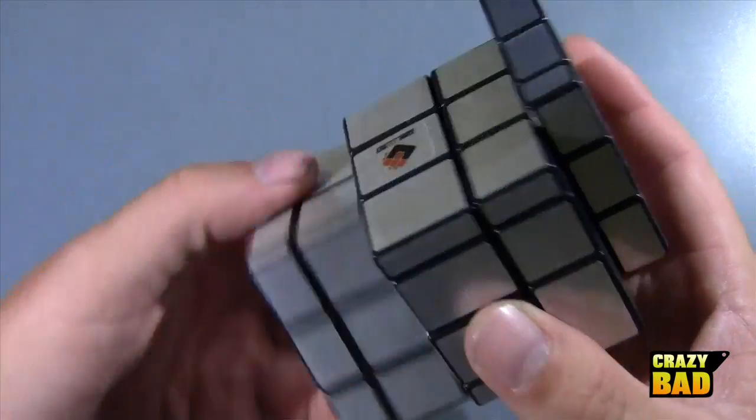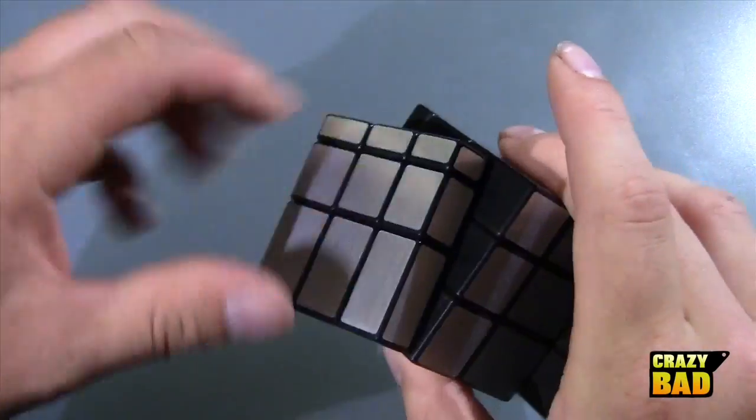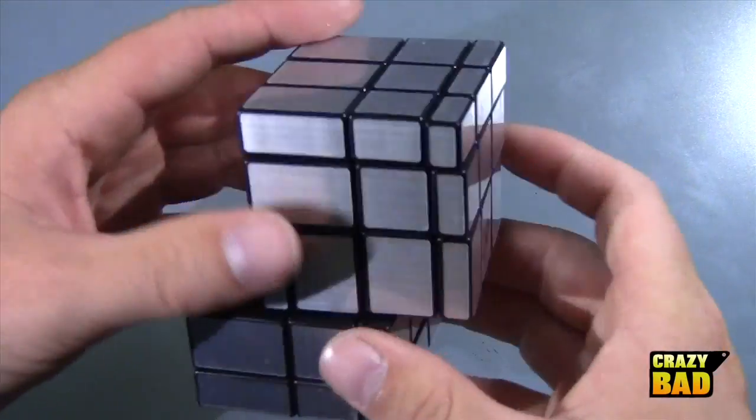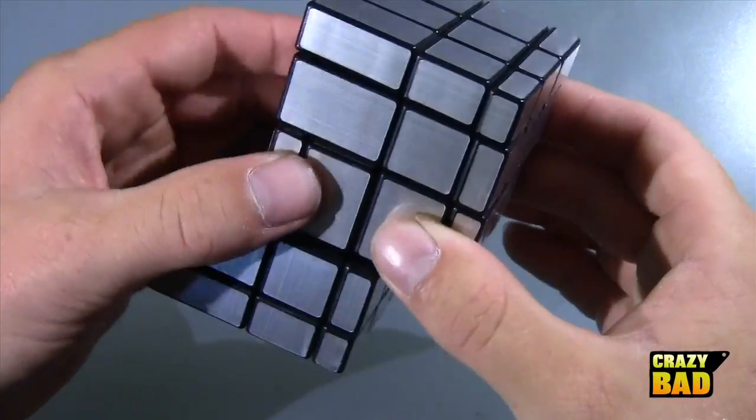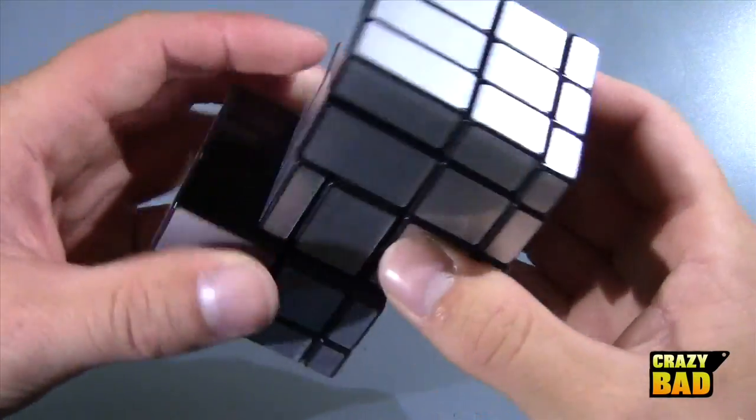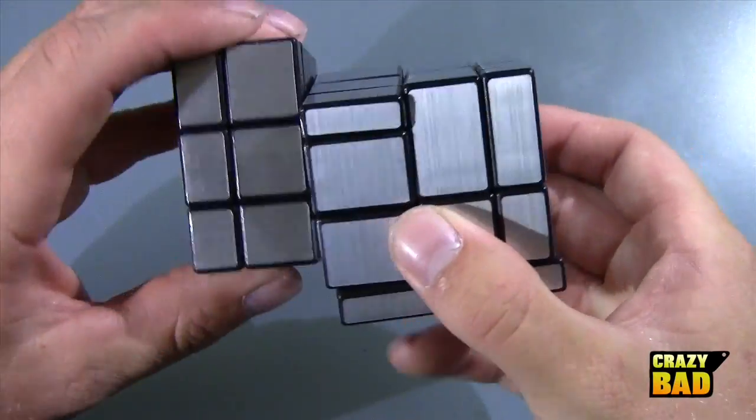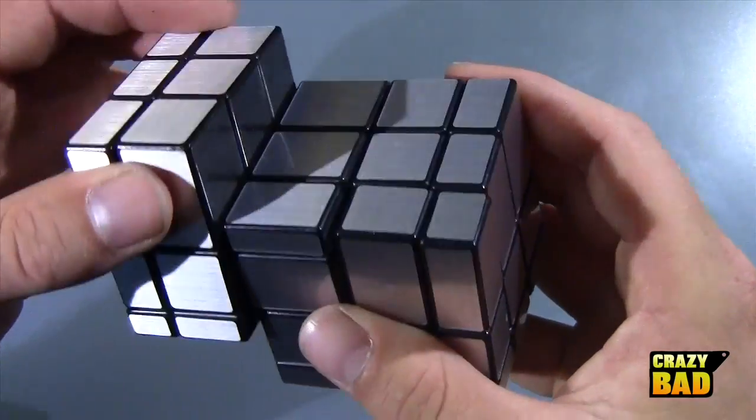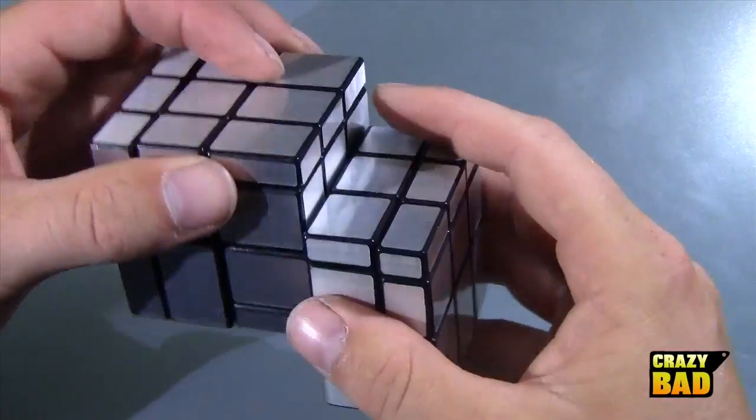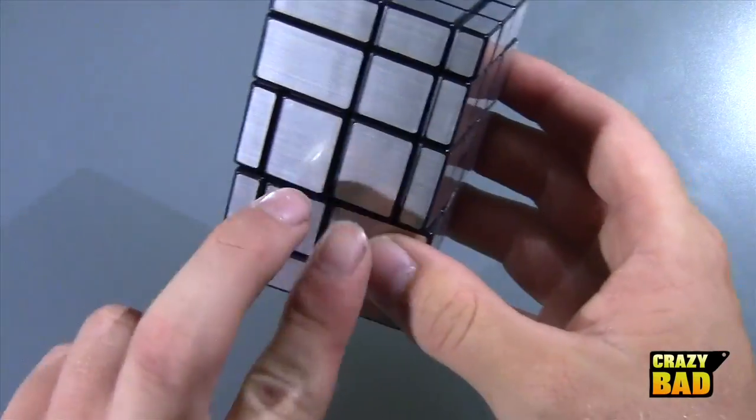But how do I... maybe have to turn that. There we go, so now I can turn this. Wow, this is going to be a difficult solve because how do I turn that? I can't. Okay, so this can turn and this can turn. So they are bandaged through these two middle layers right here, so that can't turn like this at all.